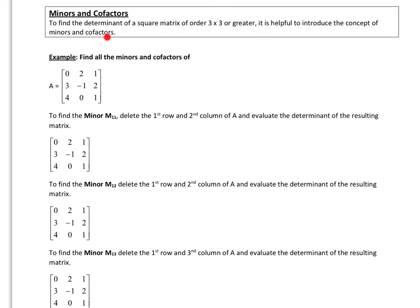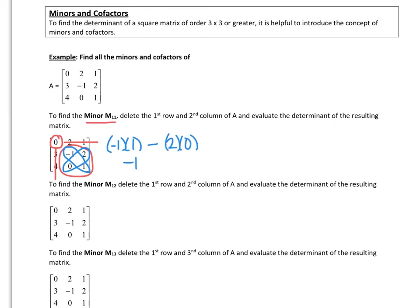Let's introduce the concept of minors and cofactors. For example, let's find all the minors and cofactors of this 3 by 3 matrix. To find minor M 1,1, we first locate first row, first column — that position here. We delete the first row and the first column and evaluate the determinant of the resulting matrix. The determinant is negative 1 times 1 minus 2 times 0, which gives negative 1 minus 0, equals negative 1. So minor M 1,1 equals negative 1.